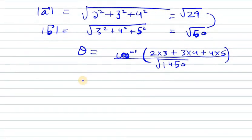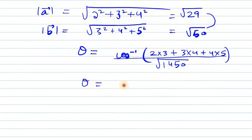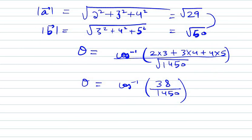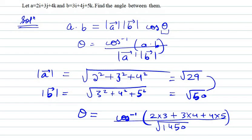Now we have theta equals cos inverse 38 over 1450. You can keep the value as it is. So this is the angle between these two vectors, that is a equals 2i cap plus 3j cap plus 4k cap and vector b.